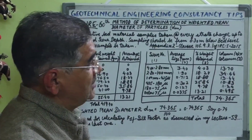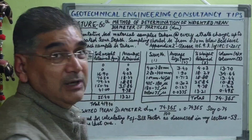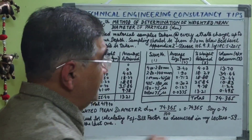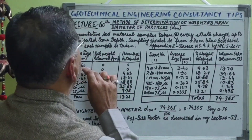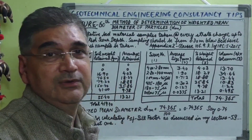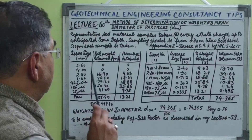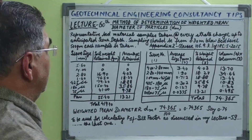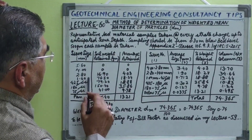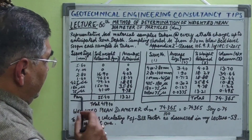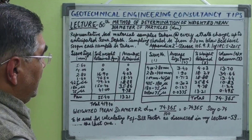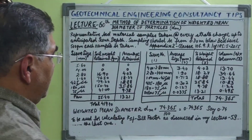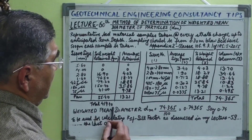Sampling should be done from 0.3 meters below bed level and should continue at every 1.5-meter interval below this, until the anticipated maximum scour depth. The code states that for calculating weighted mean diameter at every level, we should take a minimum of 500 grams of sample. In this case example, the weight of sample was found to be 490.40 grams.